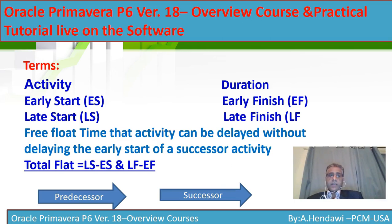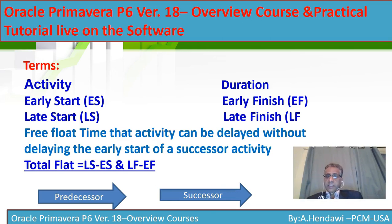Activities are the tasks you're going to do when you divide your WBS into more tasks — this is called an activity. You have Early Start, Early Finish, Late Start, and Late Finish. Each activity has a specific duration. Free float is the time an activity can be delayed without delaying the following activity. Total float is the amount of time an activity can be delayed without delaying the project.